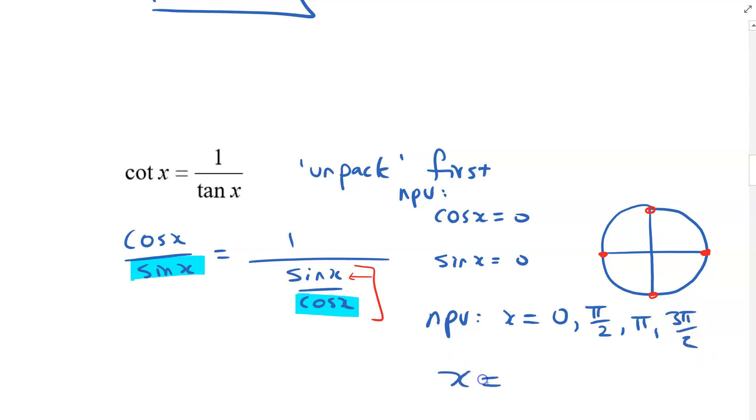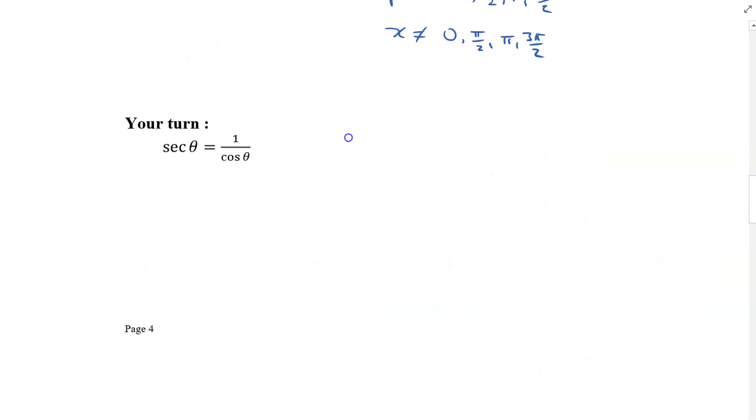Or the other way to say it is x cannot be equal to those same things. So what did I do? I looked for all the places where it's possible to get a zero in the denominator.